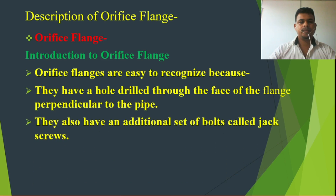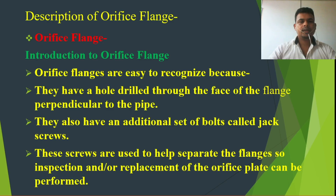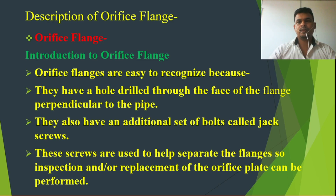The second thing is they also have an additional set of bolts called jack screws. These screws are used for a specific purpose — they are used to help separate the flanges for inspection and replacement of the orifice plate. So this jack screw is used for separating the flanges to replace the orifice plate.